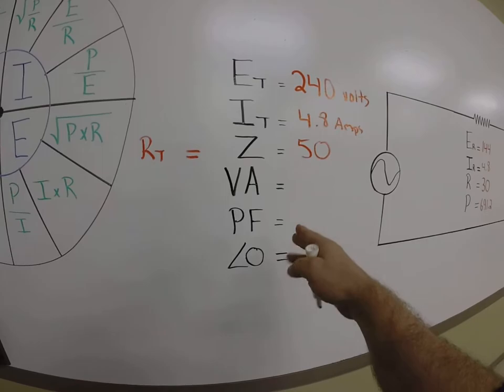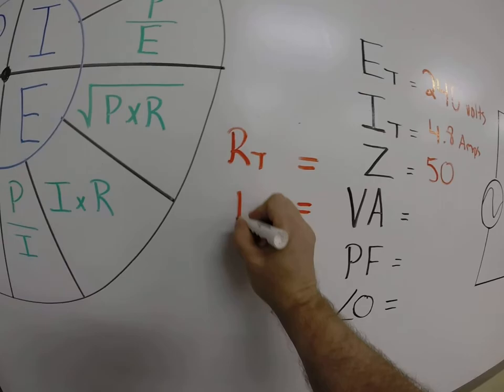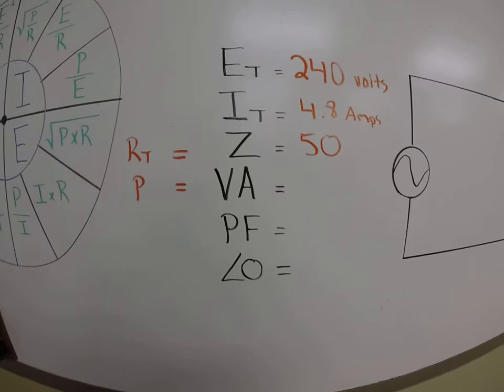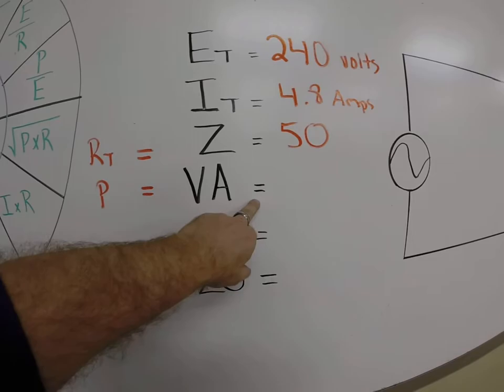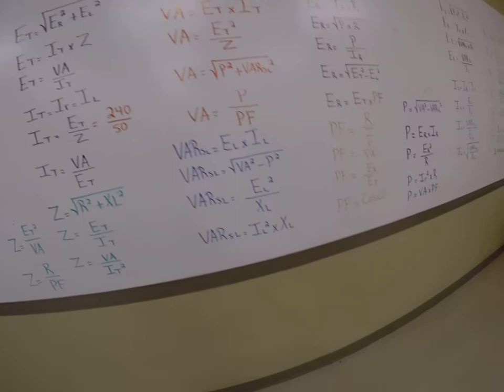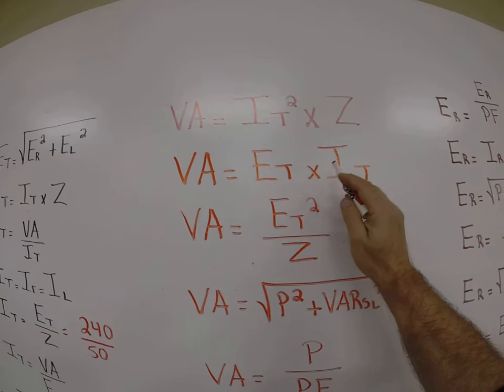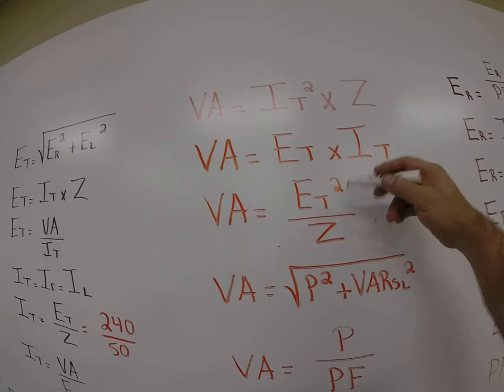Now we've got one last item here. Remember, in the total column, VA stands for volt amps. Volt amps is synonymous with P. So I can use any one of these if I want to, to solve for VA. We can use Ohm's Law over here, or you can look for a formula that says VA equals. Let's go over and do that again. Let's find my VA formulas right up there in red. VA, well, this is like saying P,